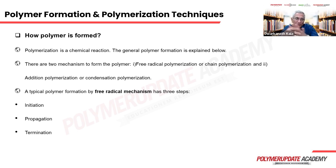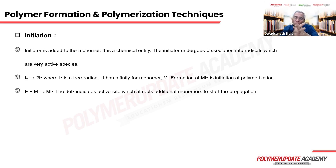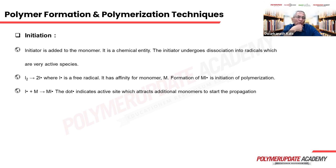Free radical polymerization has three steps: initiation, propagation, and termination. In a monomer, depending upon the monomer, some initiator is added. The initiator degrades or dissociates into radicals or free radicals, which means it has an active site. As shown in the next line, I₂ is the initiator and it forms two I· (I-dot).